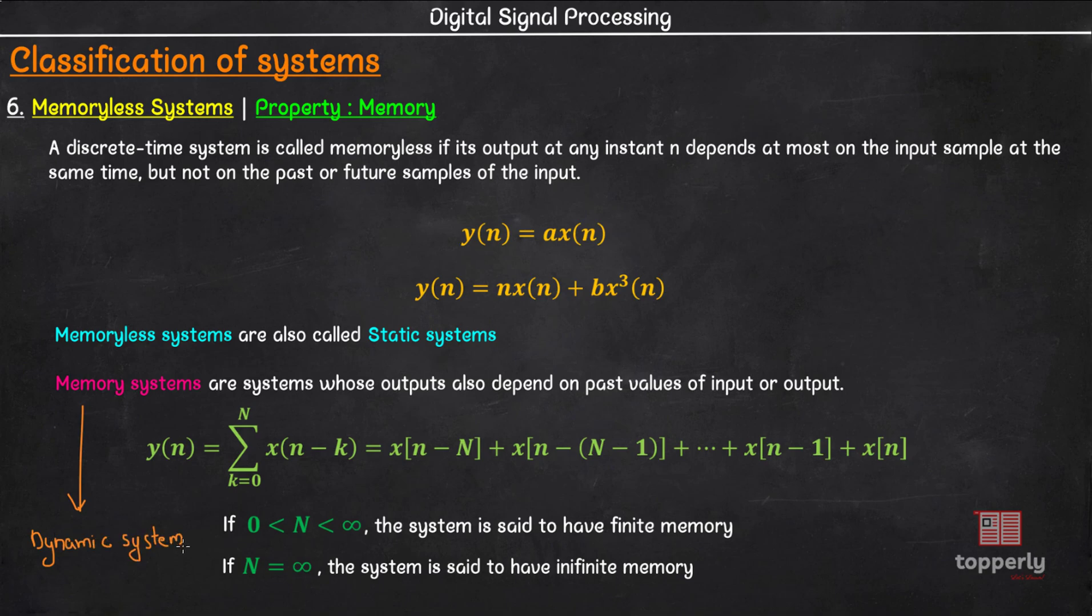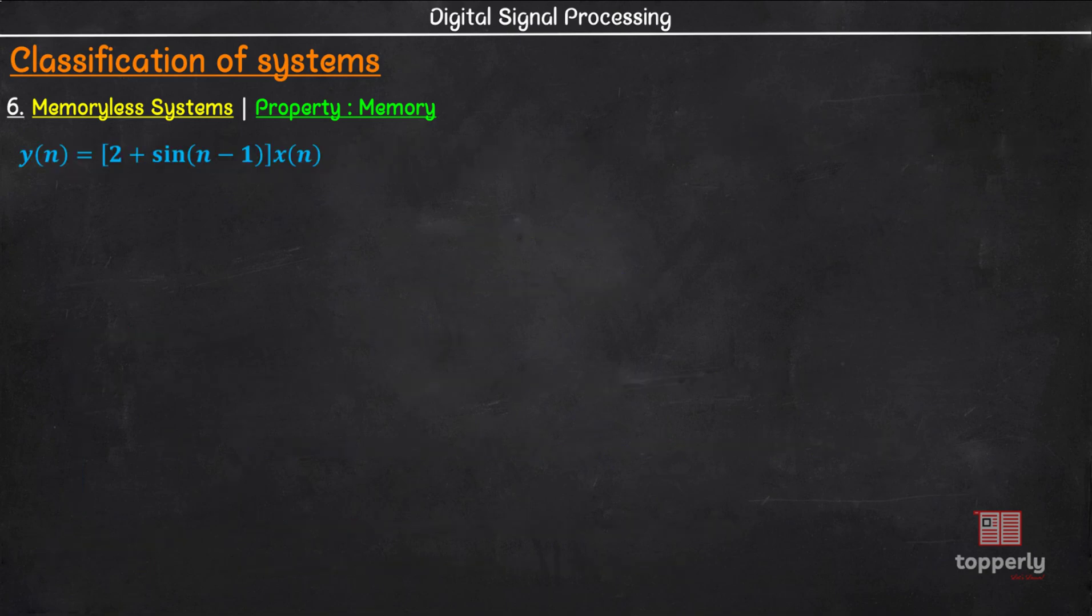Let us now see some example systems and see if they are static or dynamic systems. The first system we have is y(n) = [2 + sin(n-1)]x(n). As you can see, the output at instance n is determined only by the input x(n) at the same instance n. The output is not dependent on any past values of input. So, this is a memoryless system.